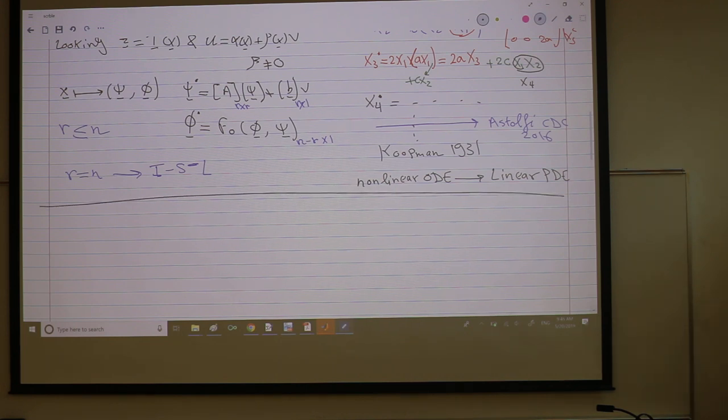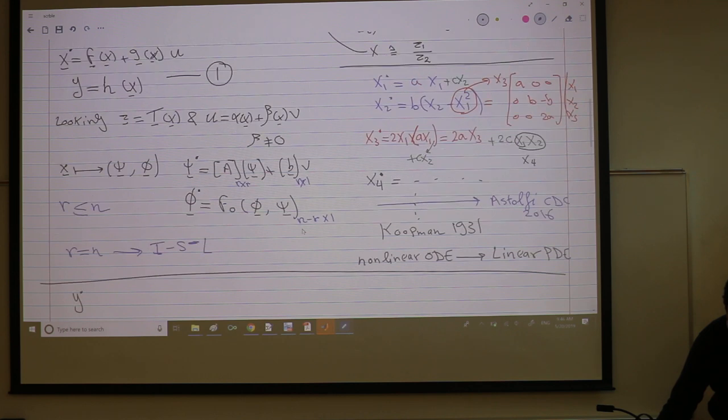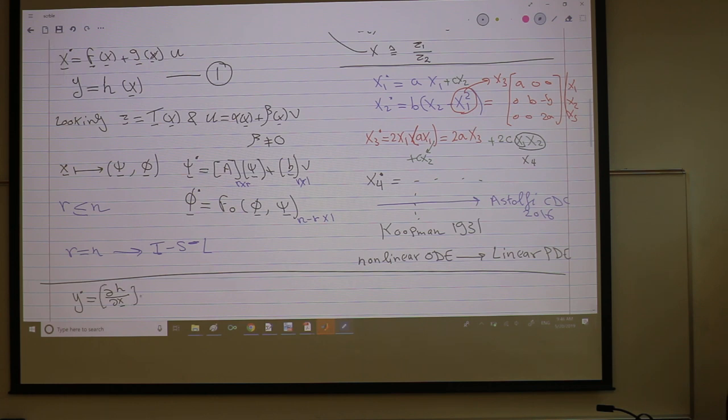So like I said, it's an input output linearization. So we'll focus on the output, and I'm gonna just work on the output. I'm gonna differentiate the output. So this is ∂h/∂x, the Jacobian, times x dot. So it's ∂h/∂x, x dot is just f plus gu, right?